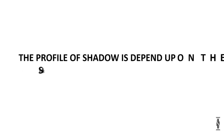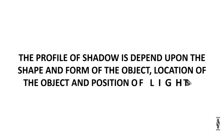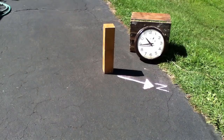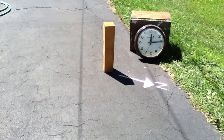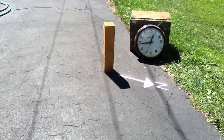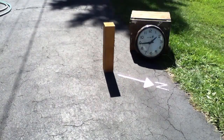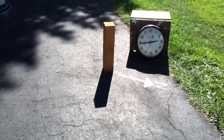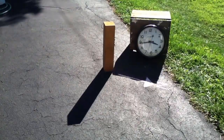The profile of shadow depends upon the shape or form of the object, the location of the object, and the position of the light source. The major light source on the earth is the sun, which changes its position throughout the day. That's why we observe different profiles and different lengths of shadow throughout the day.